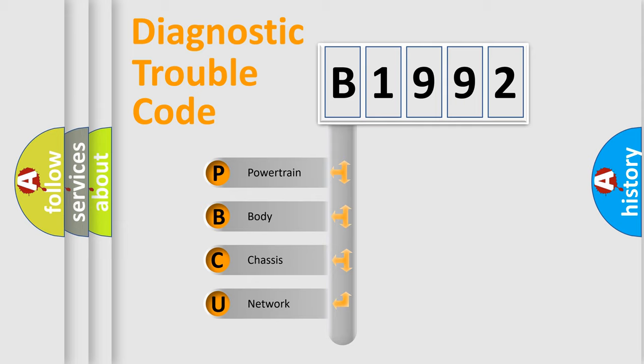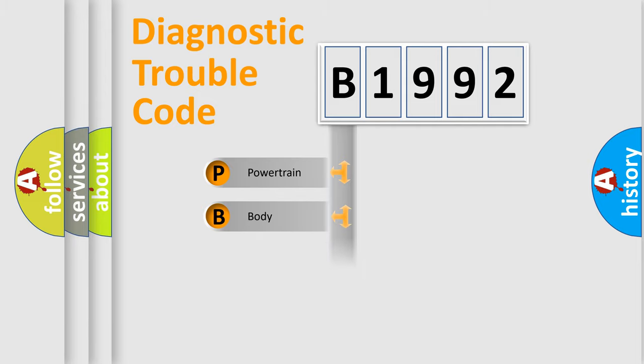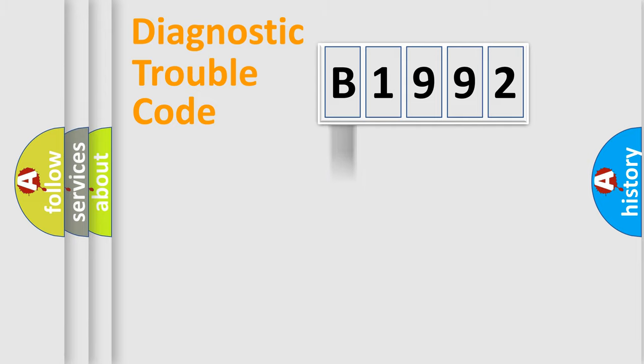We divide the electric system of the automobile into four basic units: Powertrain, Body, Chassis, and Network.